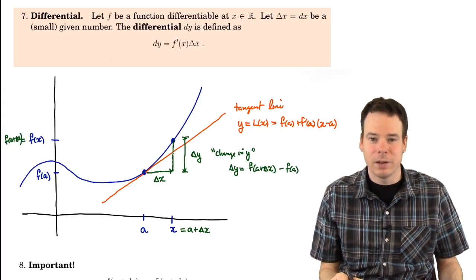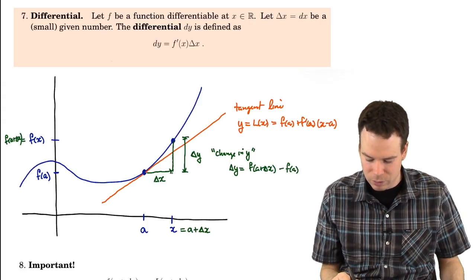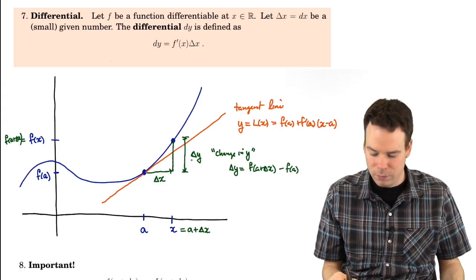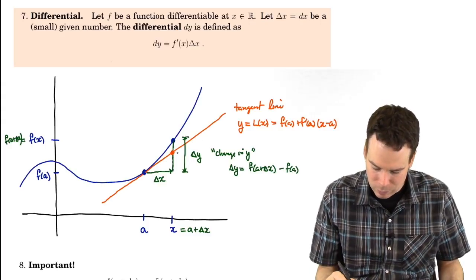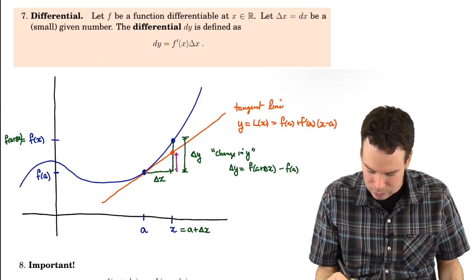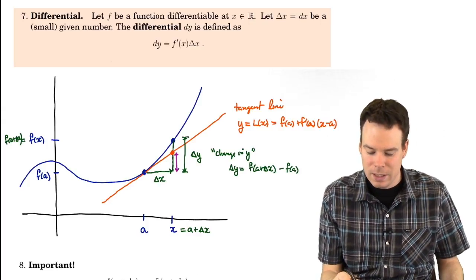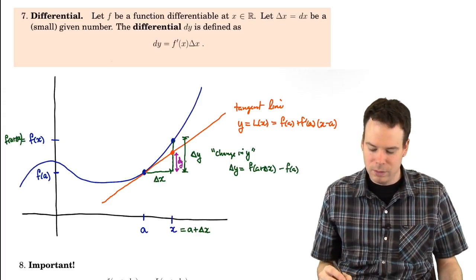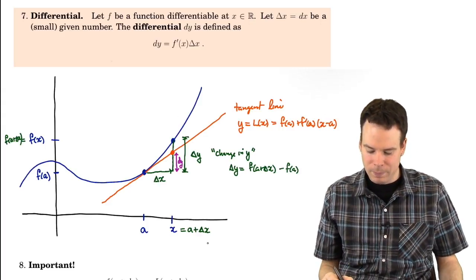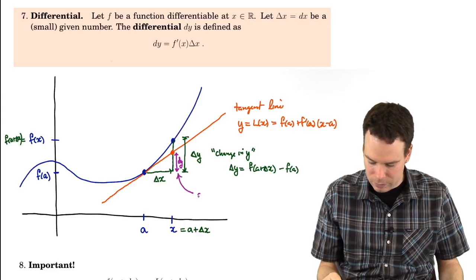How far do we have to move up to get onto the tangent line? If I move delta x units over, how far do I have to move up to get onto the tangent line — what's this distance here? That's what we're calling dy, the differential. That's where the differential fits into the diagram — that distance is the differential.